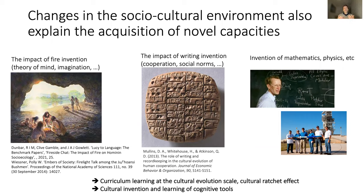Early in their evolution, the capacity for cultural transmission arose, and this had a profound ratcheting effect — with humans, for example, inventing fire, which opened niches of time for discussion at night around a fire, which may have boosted capacities like theory of mind and imagination, in turn leading to inventions such as writing, which itself fostered institutions, new social norms, changing again the environment, creating new cultural niches constantly built by successive human generations — and finally leading to things like mathematics and physics, always with the same brain but trained along a self-organized curriculum of cultural learning.